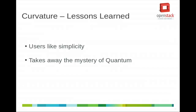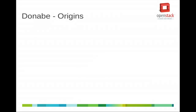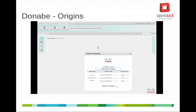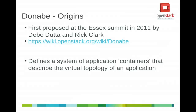Once we had Curvature and were giving it to users, we found that people were building complex virtual network topologies but then wanting to save them for later use. We had the idea to click a button, read the entire graph, and save it on a back end. But what people were actually using these things for was designing individual little components to reuse as part of larger applications. That's when our manager at Cisco, Debodutta, started talking to us about a proposal he put forward at the Essex Summit called Tanabi.